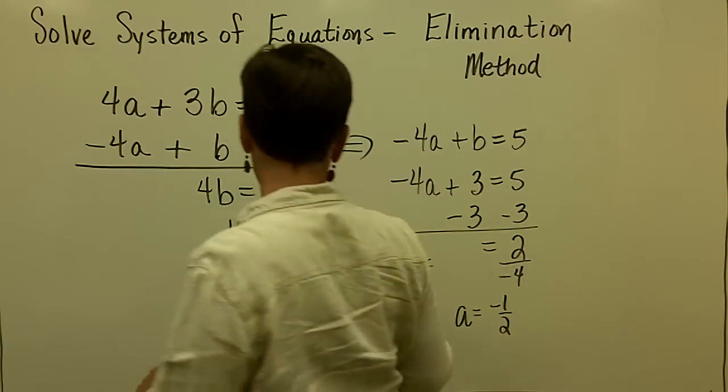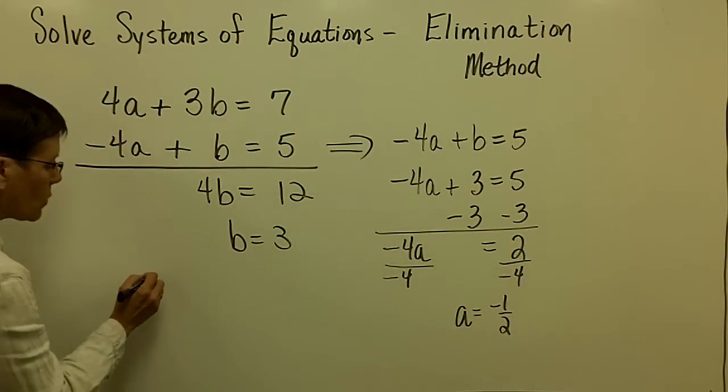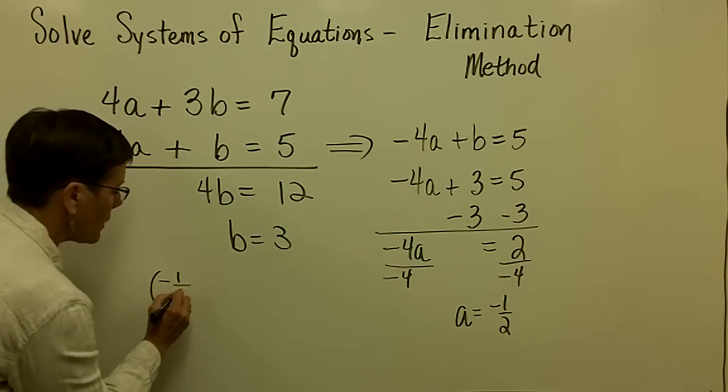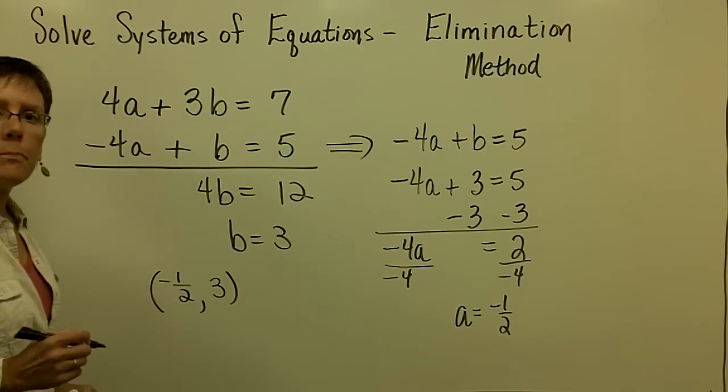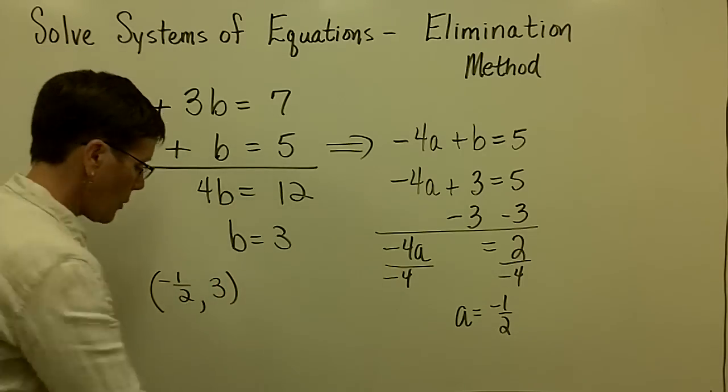You would write that in terms of an ordered pair in alphabetical order. So a is negative 1 half and b is equal to 3 in terms of writing that ordered pair.